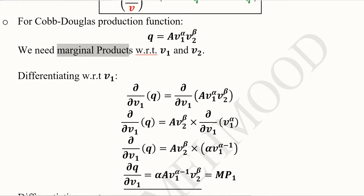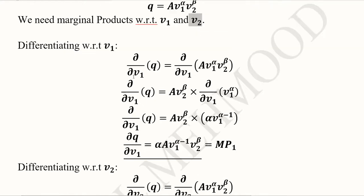Marginal products are missing and we want to find them with respect to V1 and V2, which are the two factors of production. For MP1, we are using V1 as the variable with respect to which we will differentiate, and V2 for MP2.